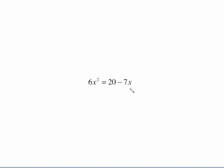Another one that's not in the right form. To get this in the right form, I'm going to want to add 7x, and at the same time subtract 20 from both sides, which will put my equation over on the left side equal to 0.